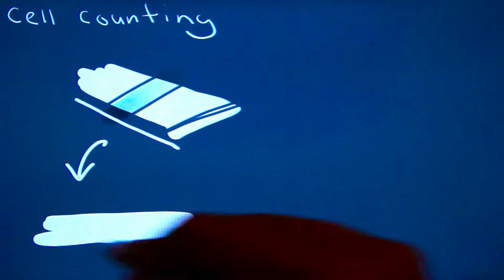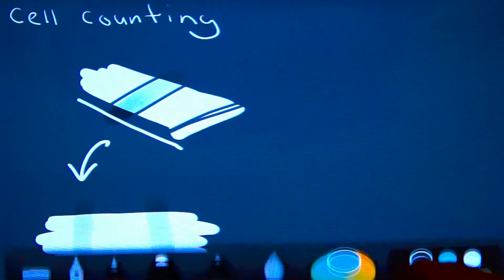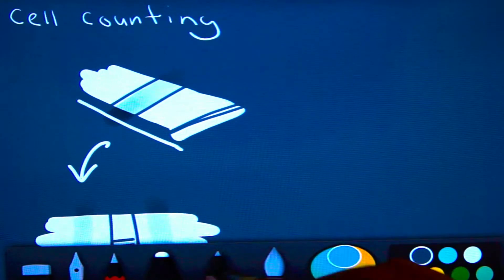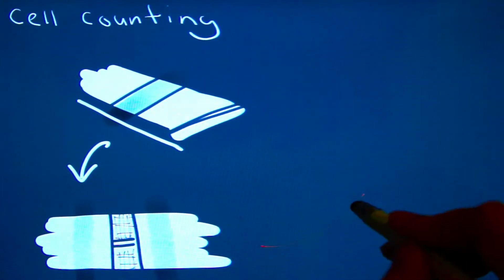It is a specialised microscope chamber slide with a small 3×3mm square etched onto its surface. This square can be further divided into 9 boxed areas of equal sizes.